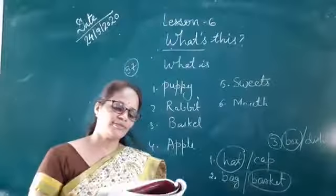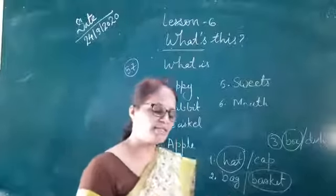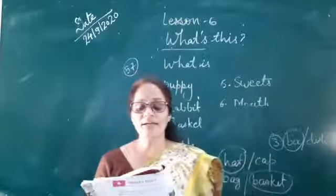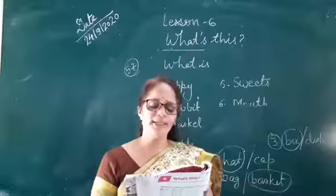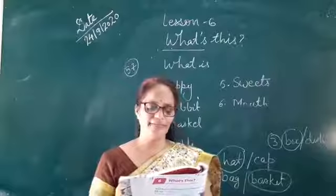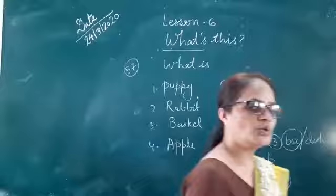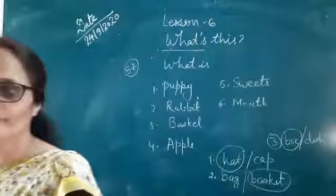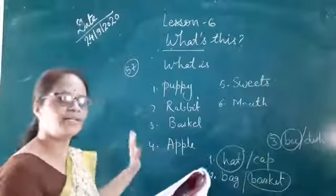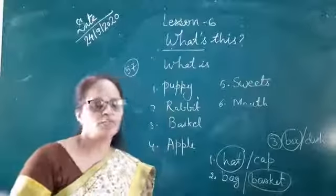Now these three sentences you will do in your book. Again I am repeating these three sentences. There is a rabbit in the hat. Number two, there is an apple in the basket. And third, there are sweets in the box. So children, do all these three sentences in your copy. Okay children? Now complete all six words in your copy and these three sentences in your book.